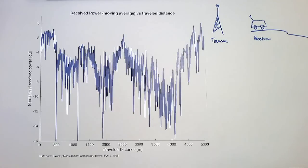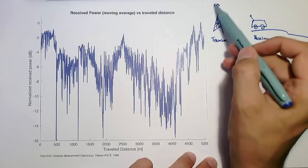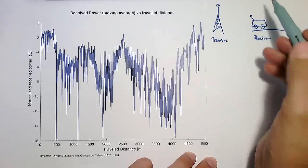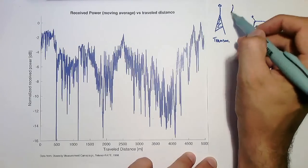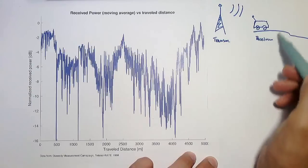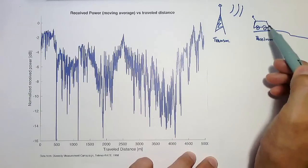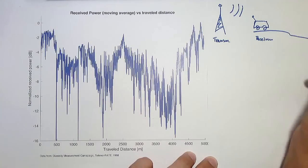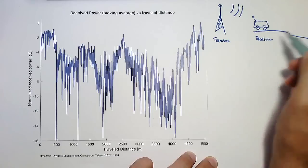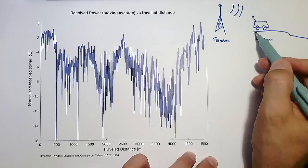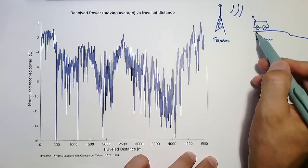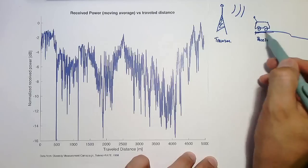Our second example is from telecommunications engineering. It's a set of data from a measurement taken at Aalborg University. Here, a radio transmitter was mounted on a mast transmitting a signal that was received by a receiver mounted on a van driving on the highway.